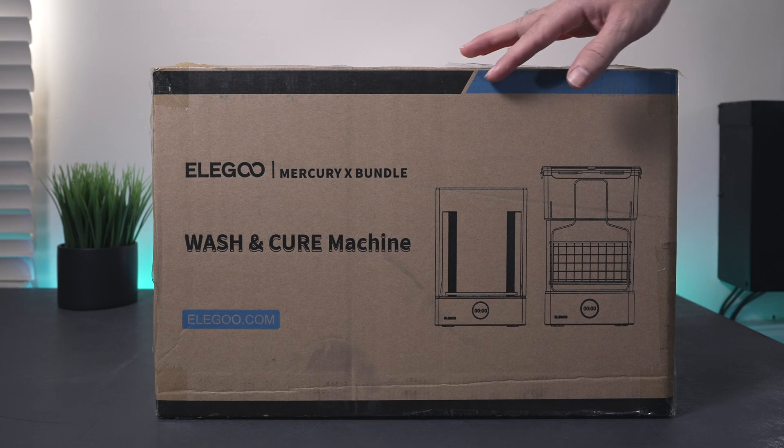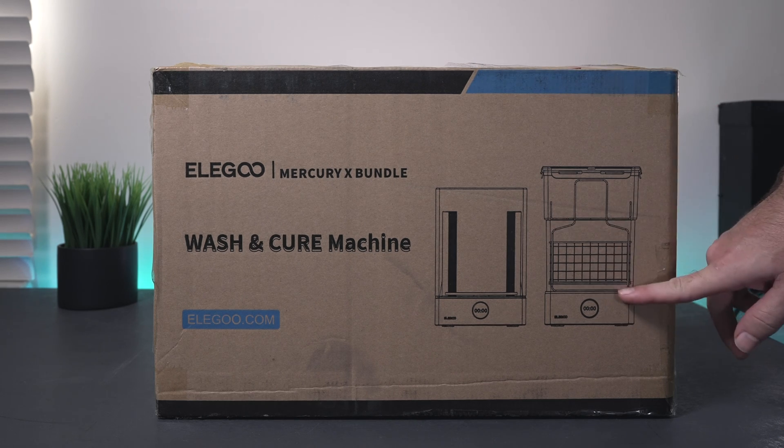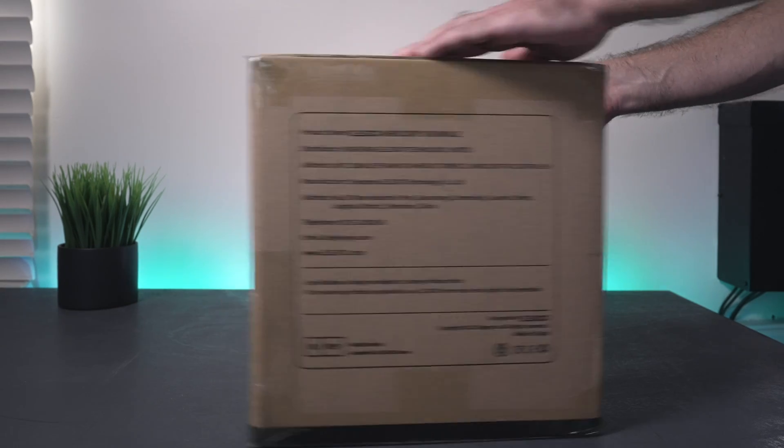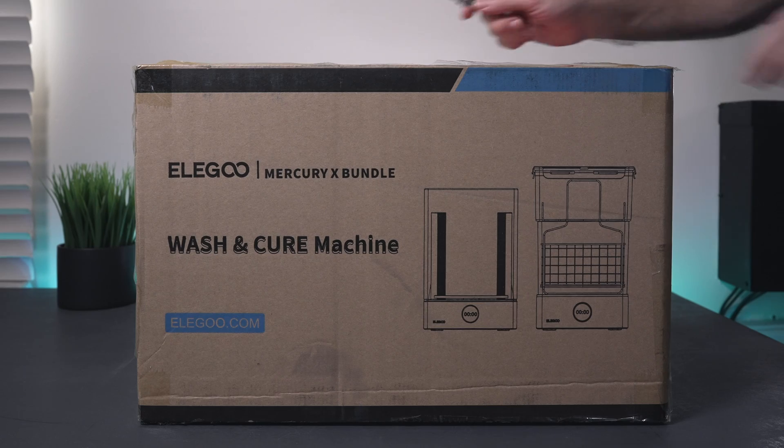Alright, so this is what the box looks like. We got a picture here of the wash and cure station. The box is not too big and weighs about 15 pounds. Not much to see there, so let's go ahead and open it up.